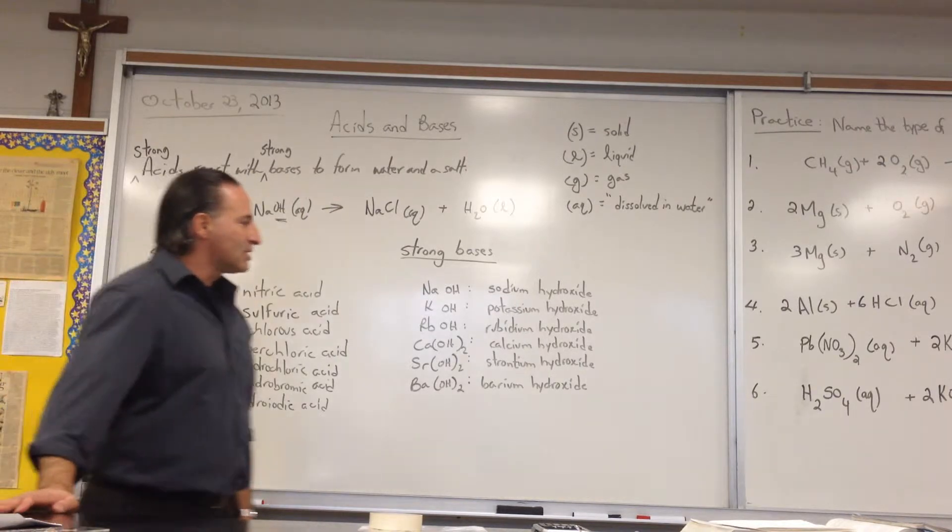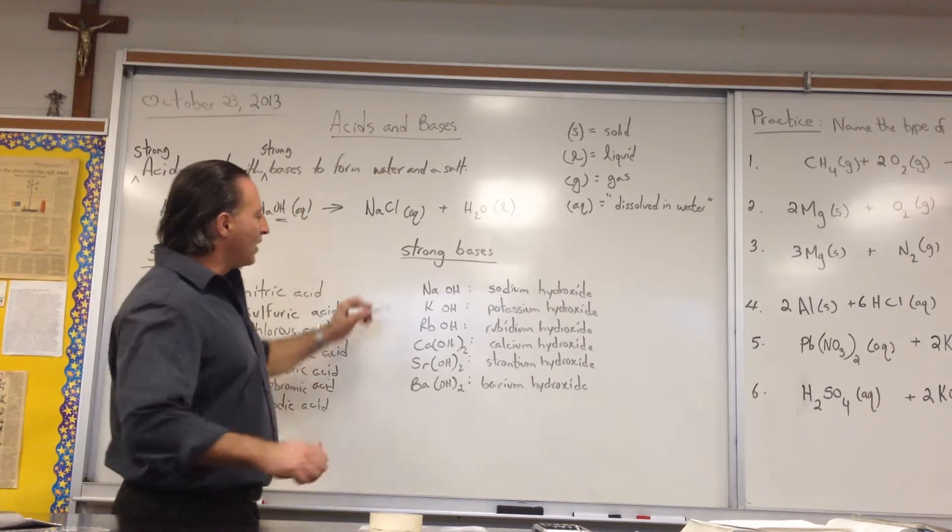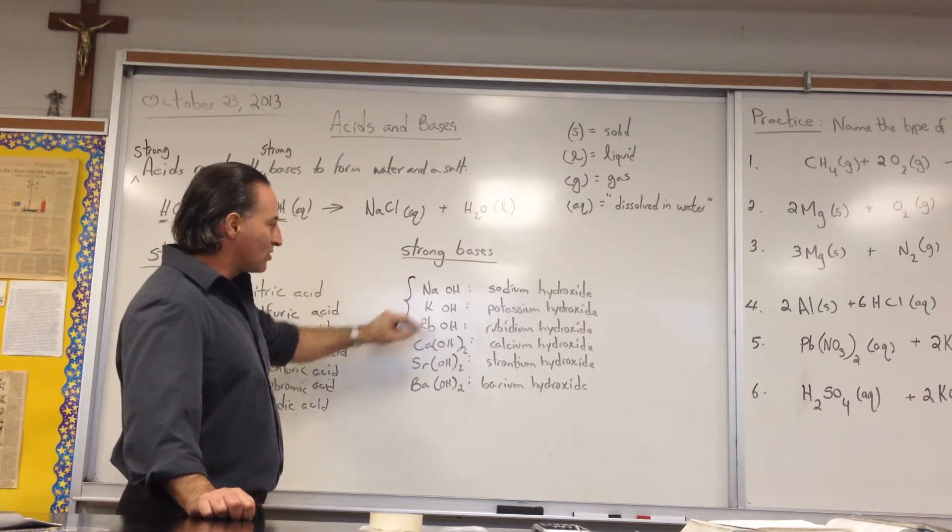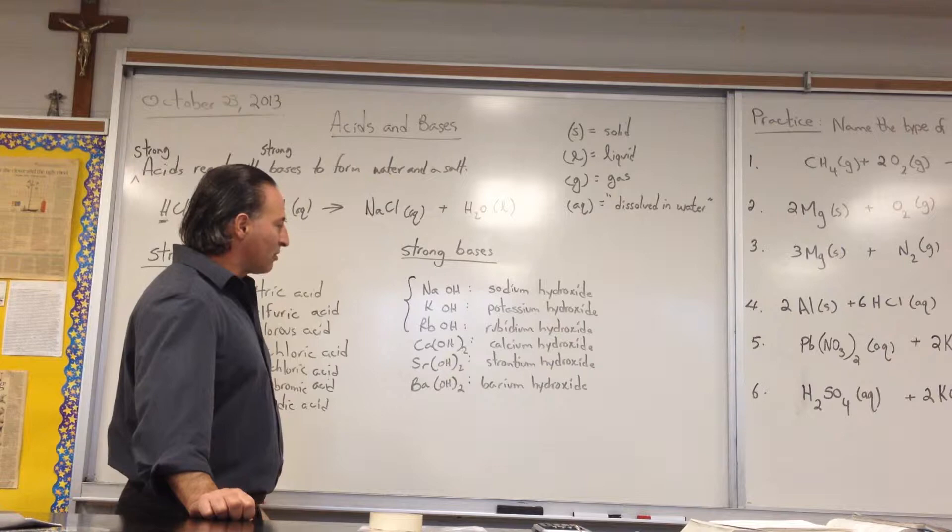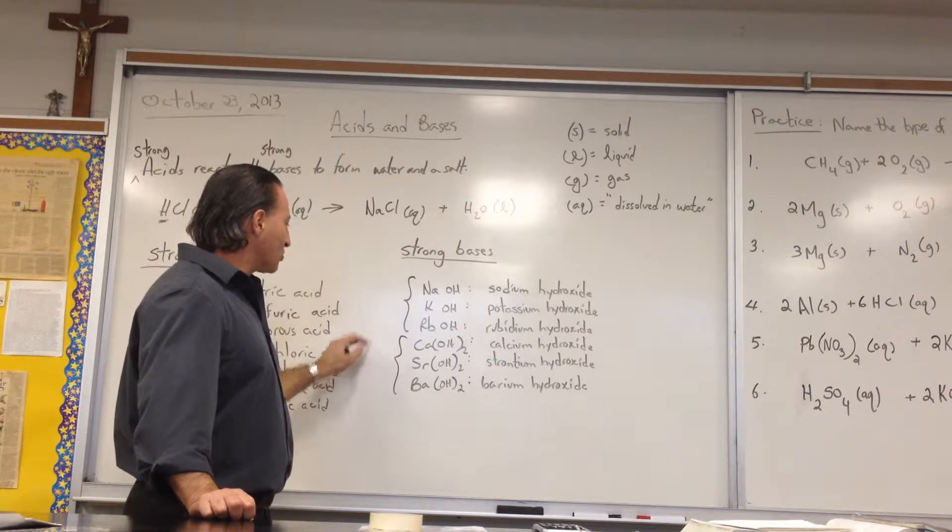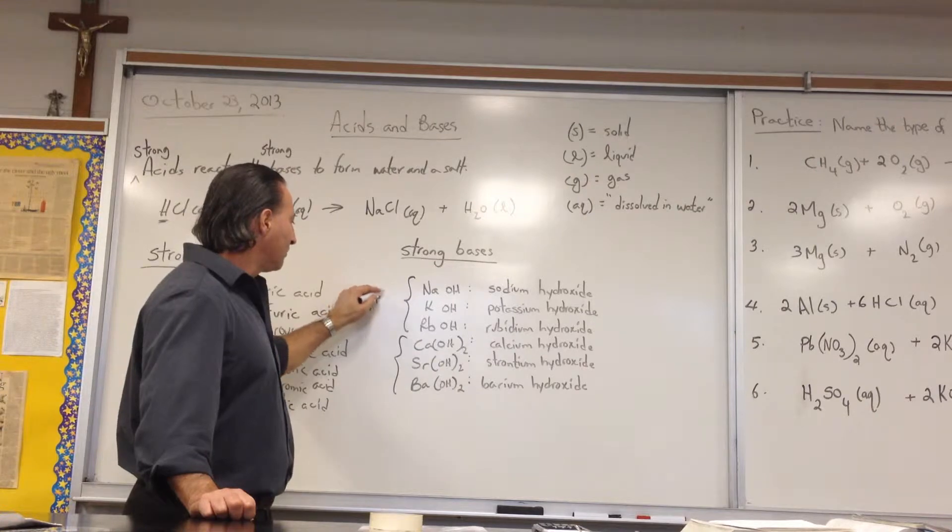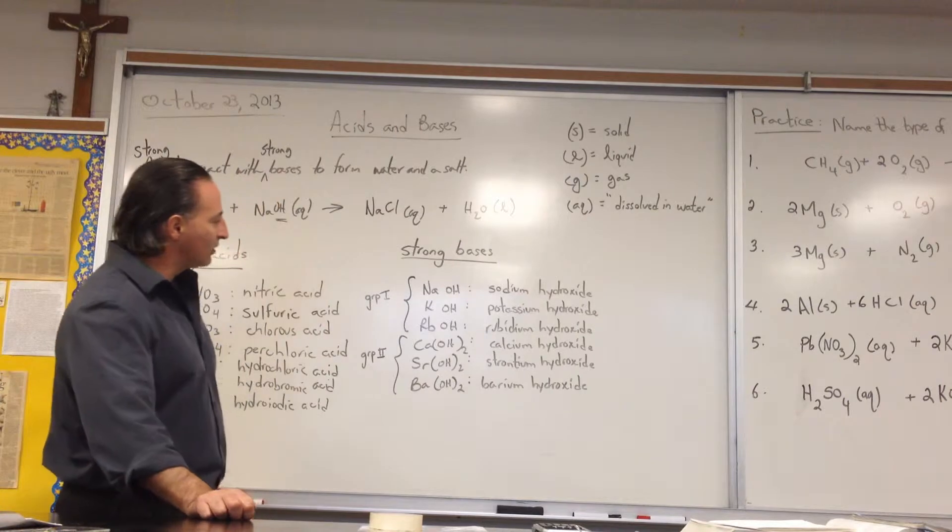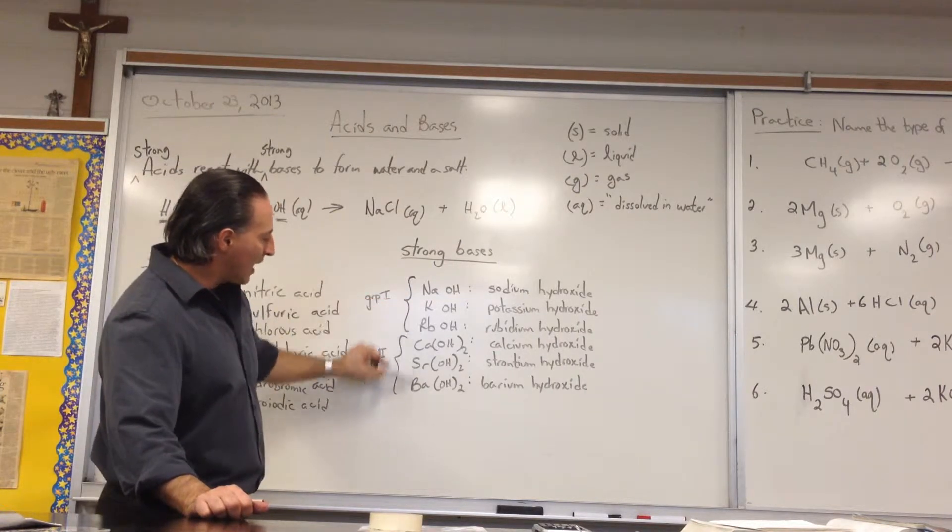For the strong bases, they are group 1 cations - sodium, potassium, rubidium - and you put one OH, one hydroxide group next to it. And calcium, strontium, barium, which is group 2. So here's group 1 and group 2 hydroxides. The way you can remember them all together is NACER CASERBOT.